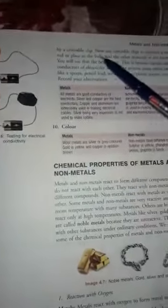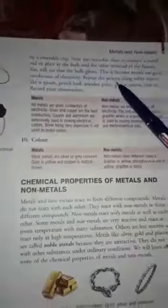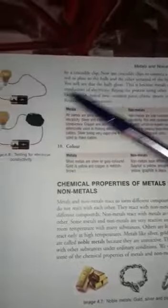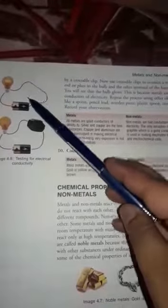By the crocodile clip, now use the crocodile clip to connect the metal rod and plate to the bulb and other terminal to the battery. We will see that the bulb will glow in this first case because it is a metal.